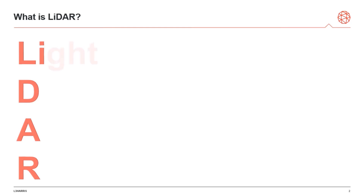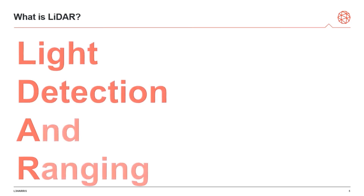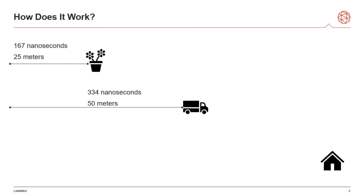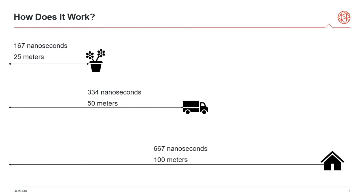LiDAR is an acronym for Light, Detection, and Ranging. We create particles of light called photons with a laser. We then use a photon detector to time how long it takes for those photons to reflect off of a target and come back to our sensor. Using this time of flight for the photon and the speed of light, which is approximately 300 million meters per second, we can determine how far away the target is, also known as the range.